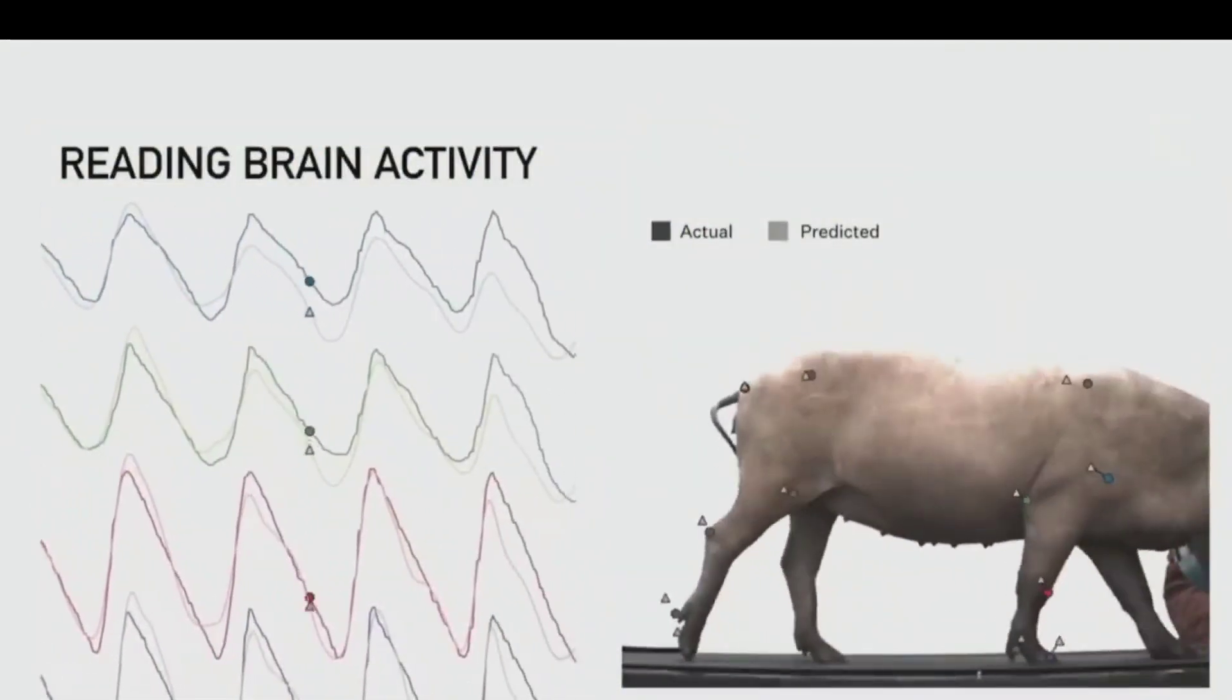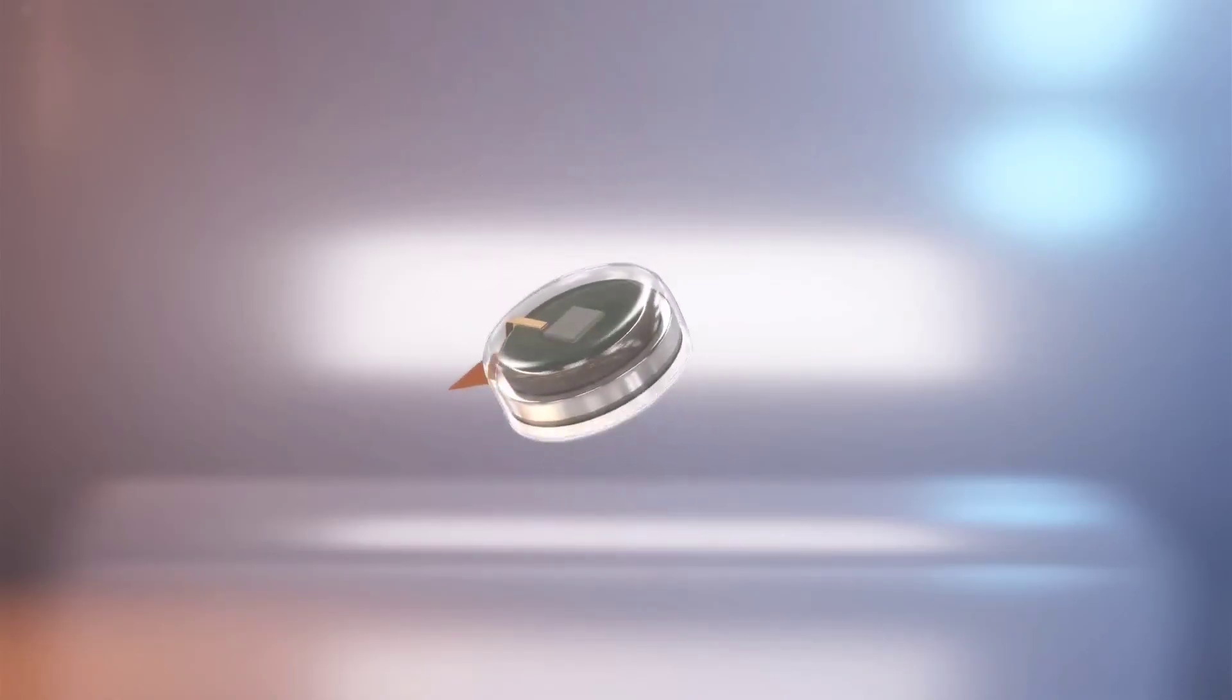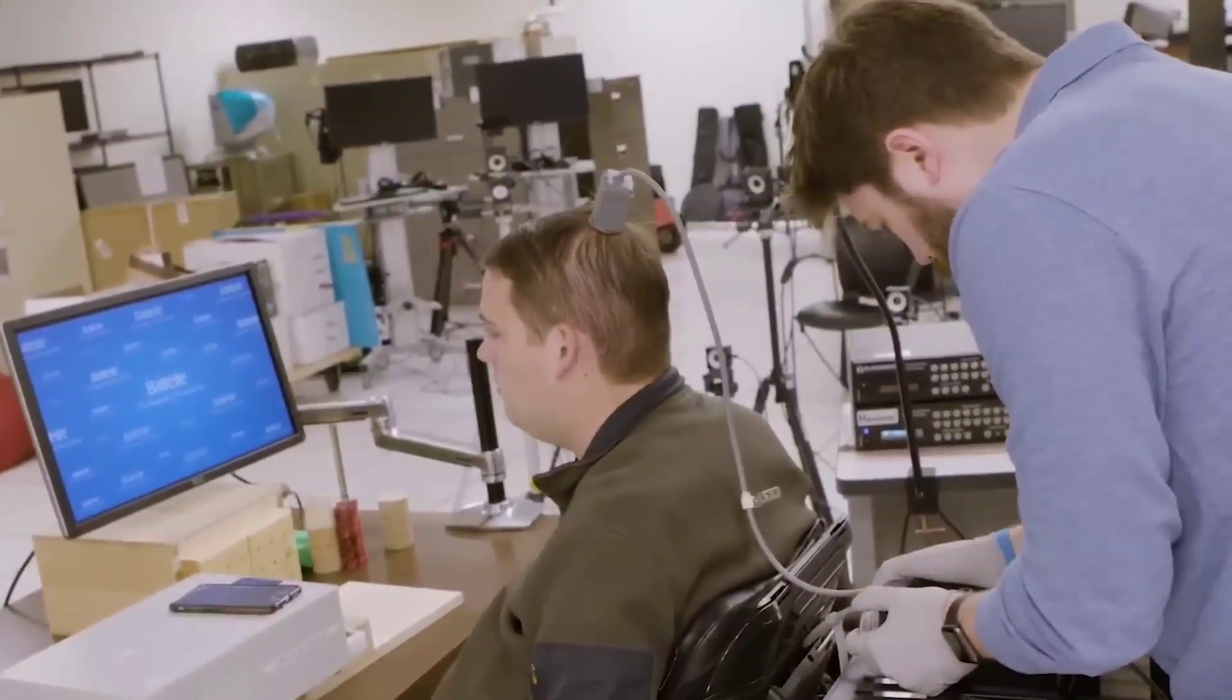BrainGate employs the Utah Array, which is a network of stiff needles with up to 128 electrode channels. Not only are there fewer channels than Neuralink claims, which means fewer data from the brain is captured, but the threads are also stiffer.